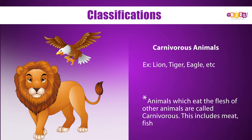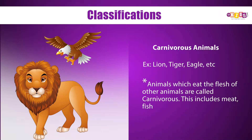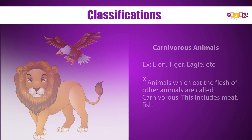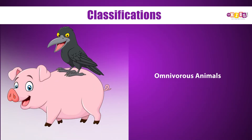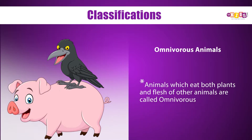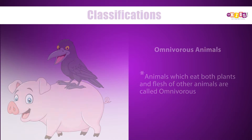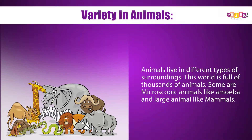Carnivorous animals — example: lion, tiger, eagle, etc. Animals which eat the flesh of other animals are called carnivorous. Omnivorous animals: Animals which eat both plants and flesh of other animals are called omnivorous.